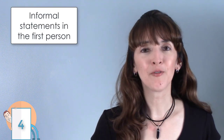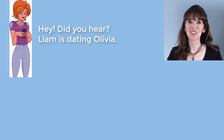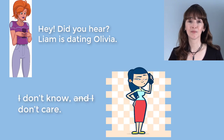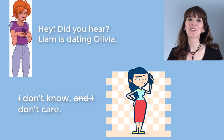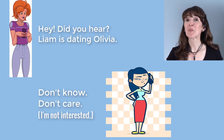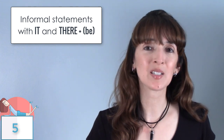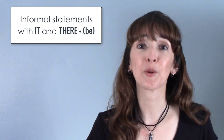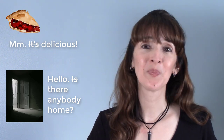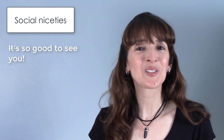Here's another pattern. Informal statements made in the first person might omit the subject pronoun. For example, someone says, 'Hey, did you hear? Liam is dating Olivia.' The response: 'Don't know. Don't care.' Notice how this is a negative response — 'Don't know. Don't care' — expressing a complete lack of interest. Also, in informal statements, we can drop the subject 'it' or 'there' and the verb 'be.' Think of all the social niceties we say — many of them use ellipsis: 'So good to see you.'